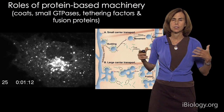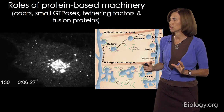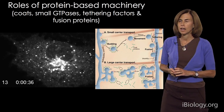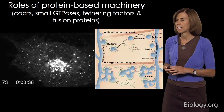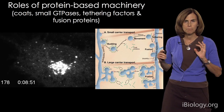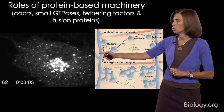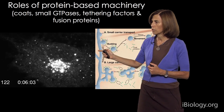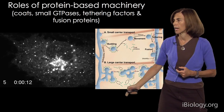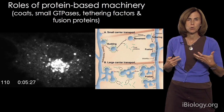Traditionally, people who have studied this very dynamic system have focused on the role of protein-based machinery in regulating the trafficking between these different compartments. Important roles for coat proteins, small GTPases, tethering factors, and fusion proteins have all been found to play important roles in this process by which molecules move from one place to another within the system. This movie is showing you an example of this dynamic movement, where transport intermediates are forming off the surface of the ER and targeting to the Golgi apparatus through this very complex protein-based machinery.